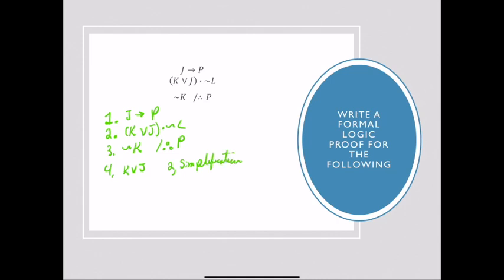Now I have K or J, and I have not K. If I have K or J and not K, that looks a lot like disjunctive syllogism. Disjunctive syllogism says if I have P or Q and not P, therefore Q. So this lets me get J all by itself, using rows 4 and 3, disjunctive syllogism.